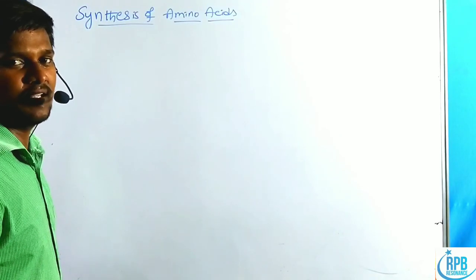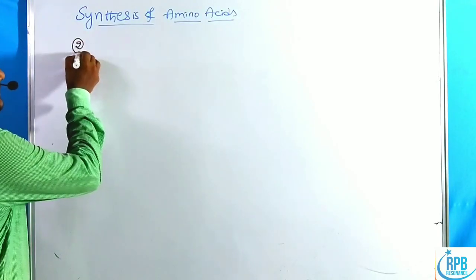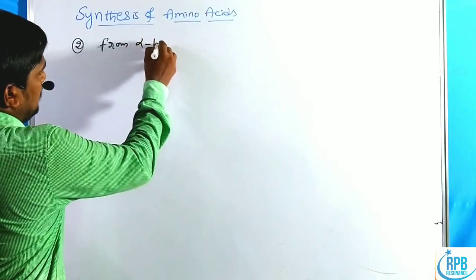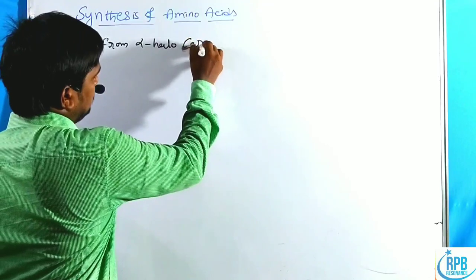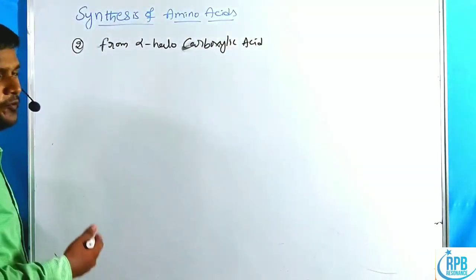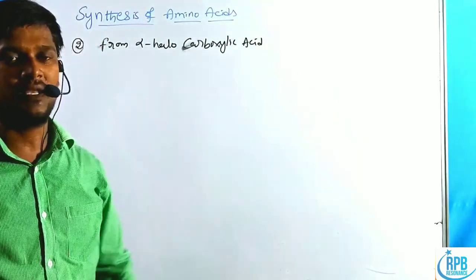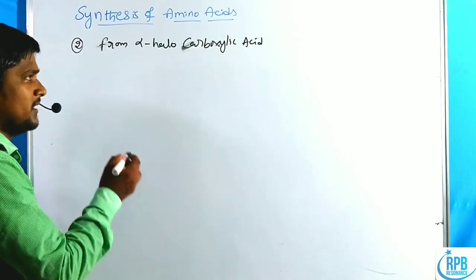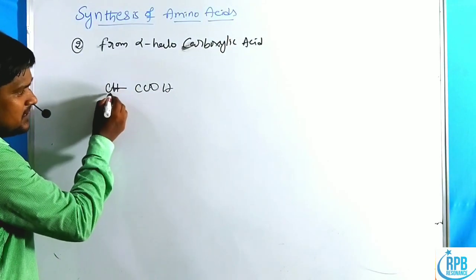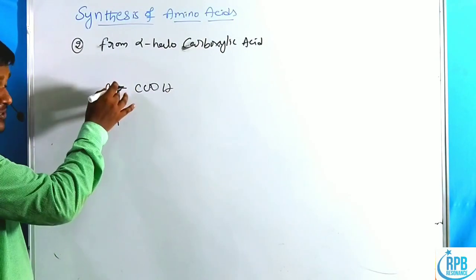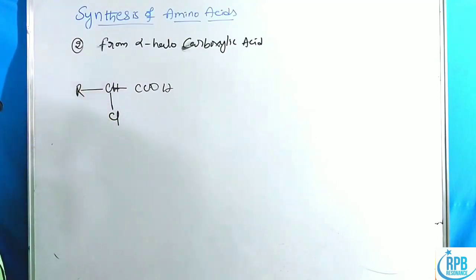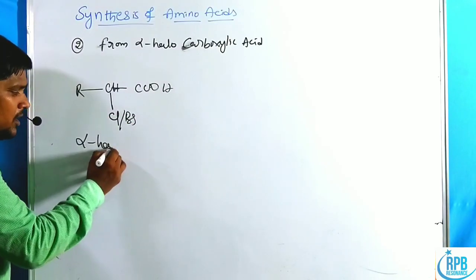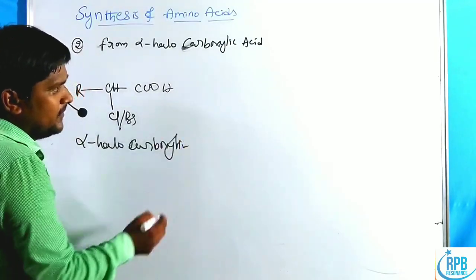The second synthetic method is preparation of amino acids from alpha halo carboxylic acids. In this compound the carboxylic acid has a halogen (Cl or Br) at the alpha carbon position — this is called an alpha halo carboxylic acid.